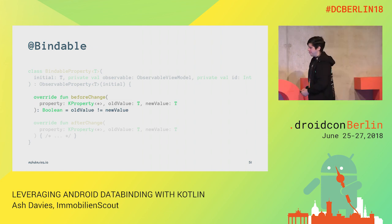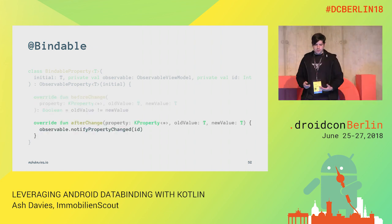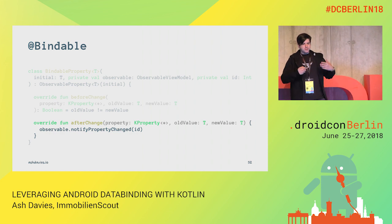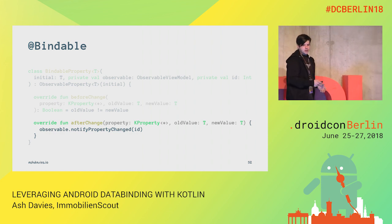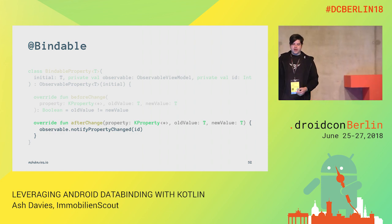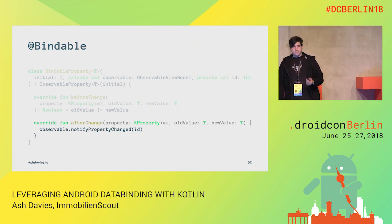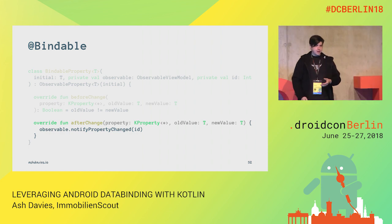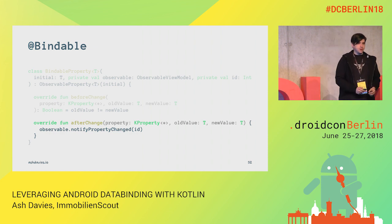We also have afterChange, which does the notification job — letting the observable know that this property has changed. In our constructor, we take in the initial value, the observable to notify, and the identifier of the field. The identifier of the field will be the property from the BR class.